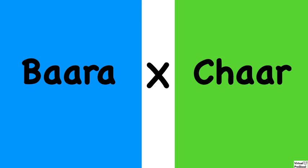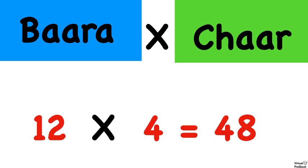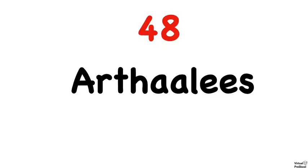So that means we're doing 12 times four — bara times jaar. Bara times jaar is 48. Very good. And the way we say 48 in Hindi is artalis. Artalis. All right, let's do the next one.